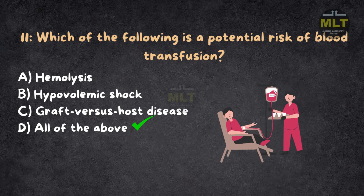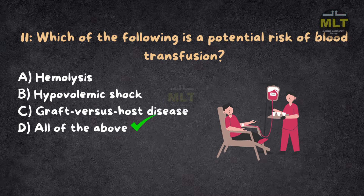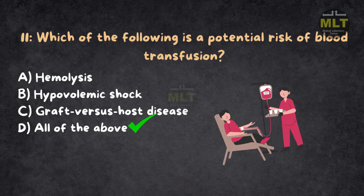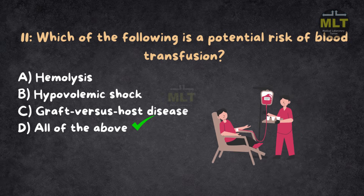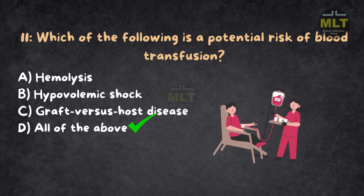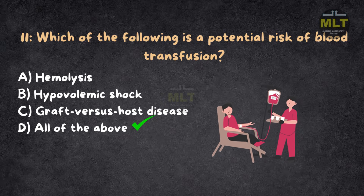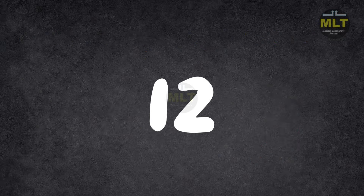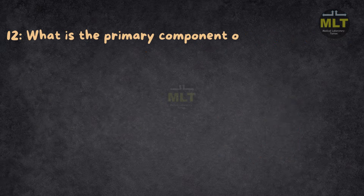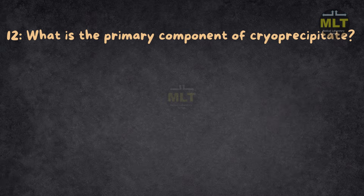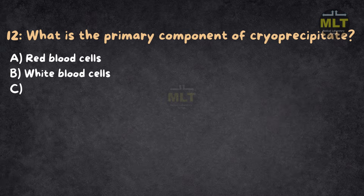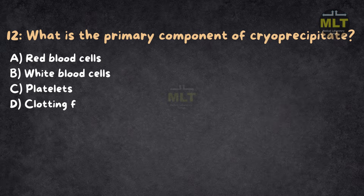Hemolysis, hypovolemic shock, and graft versus host disease can each occur independently or in combination. Question 12: What is the primary component of cryoprecipitate? Option A: Red blood cells. Option B: White blood cells. Option C: Platelets. Option D: Clotting factors. Correct answer: D, clotting factors.